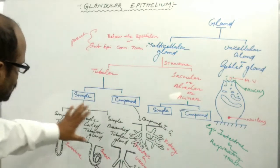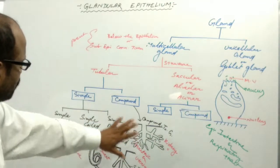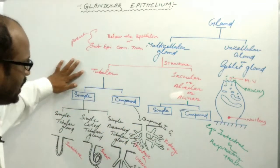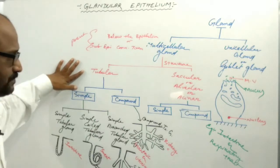The kidney glands are an example of the compound tubular gland where several main ducts are present — for example, four tubular glands.